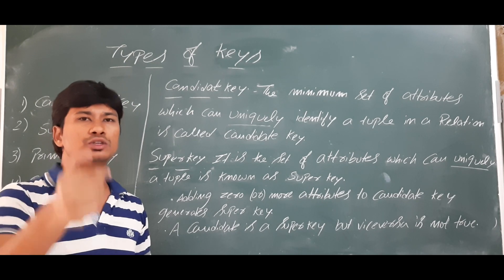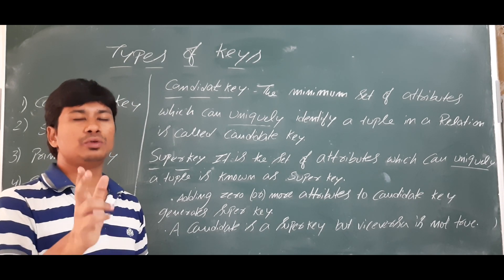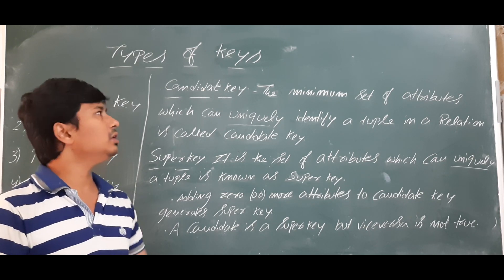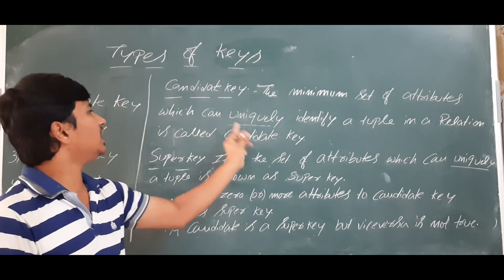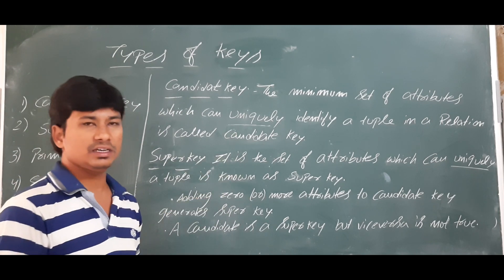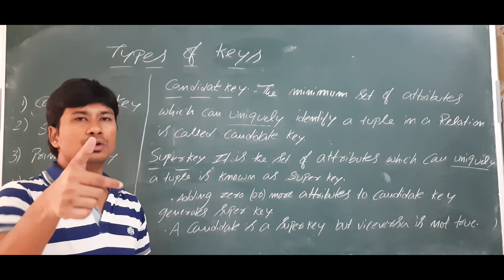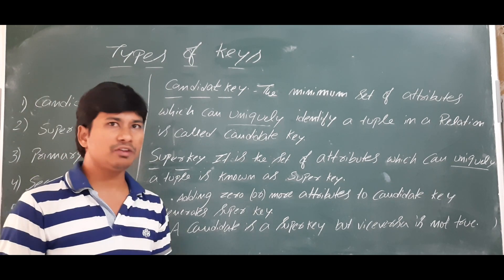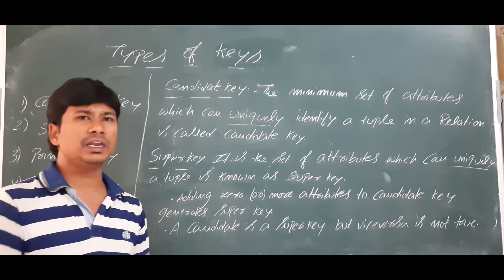So we use a roll number — each student has a unique roll number, so using the student roll number we can uniquely identify any student. Therefore, the minimum set of attributes which can uniquely identify a tuple in a relation is called a candidate key. In this example, roll number is the candidate key.